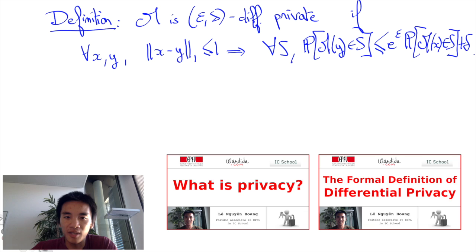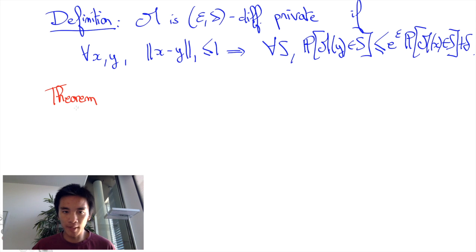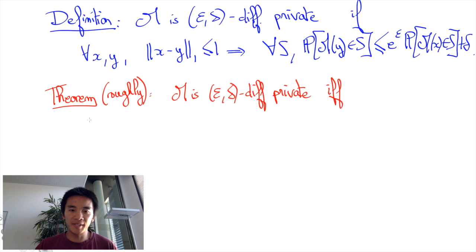Then we have the following theorem: the mechanism m is epsilon-delta differentially private if and only if for all databases x and y such that the distance between x and y in norm 1 is at most 1.